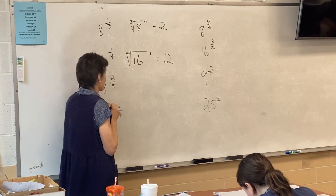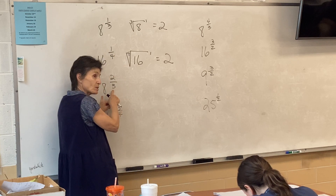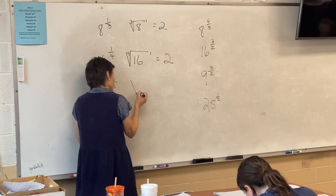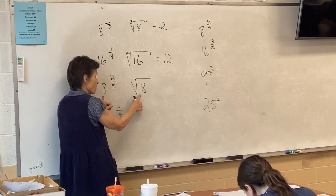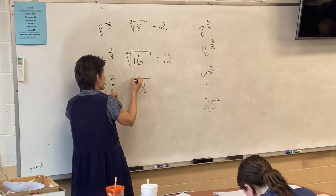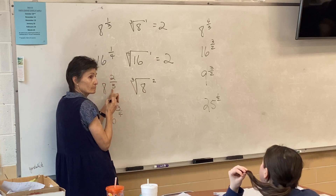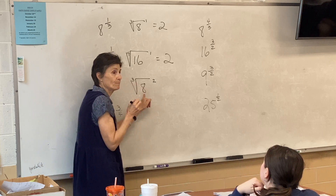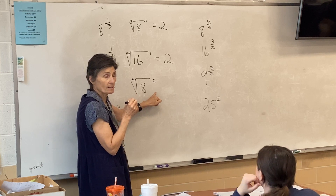Now what about this one? It's a fraction so it's a radical, and the number goes under the radical. The two-thirds power means cube root squared. So what's the cube root of eight? Two. Two squared is four.